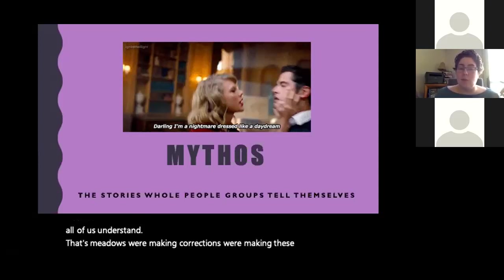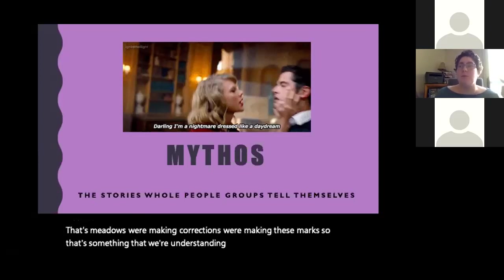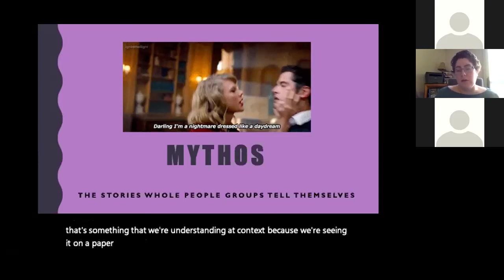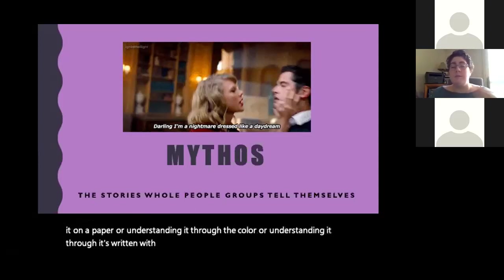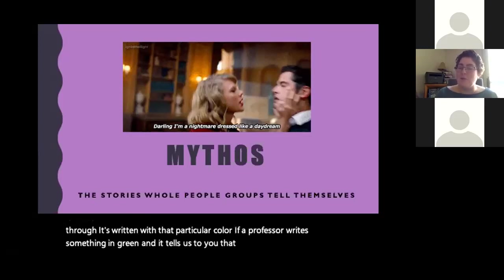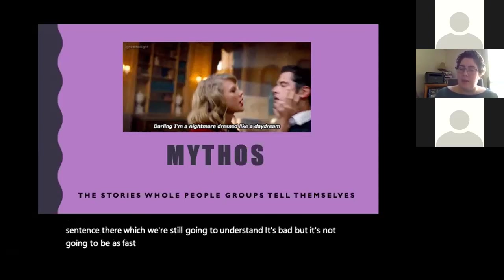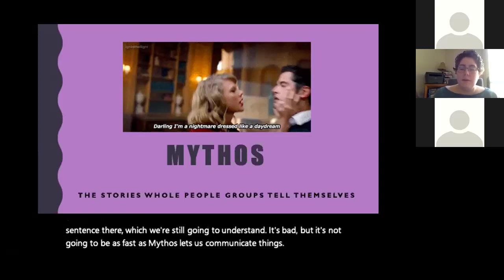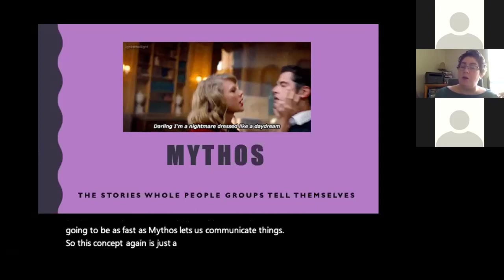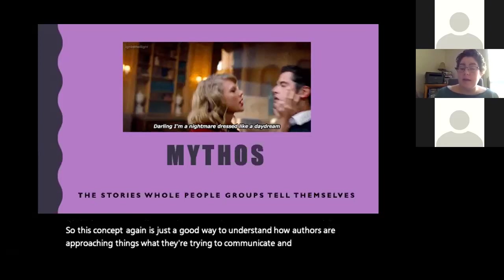These are concepts all of us understand — that's mythos. We understand it through context, through the color, through what's written. If a professor writes in green that you have a run-on sentence, we'll still understand it's bad, but it won't communicate as fast as mythos allows. So this concept is a good way to understand how authors are approaching things, what they're trying to communicate, why, and who they think their audience is.